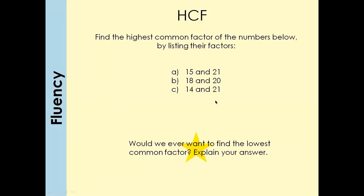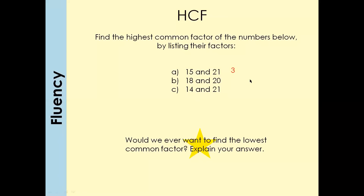Now here are a few more questions. You have to find the HCF of these numbers using what we discussed in the previous slide. Find the factors of 15 and 21, find the common factors, find the highest common factor. Same with 18 and 20, and the same with 14 and 21. These are very simple questions — give them a go. If not, I would suggest going back to the previous slide and watching it again.